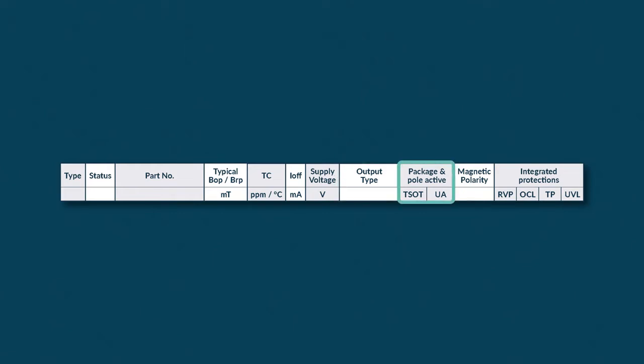As earlier explained, the sensor will be sensitive in a field spectrum that is either north or south. With magnetic polarity, there is an option to invert the output signal.